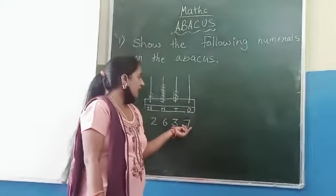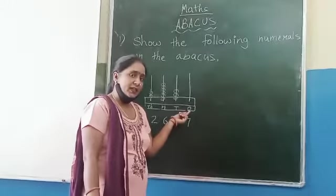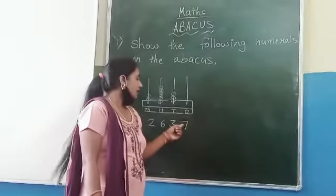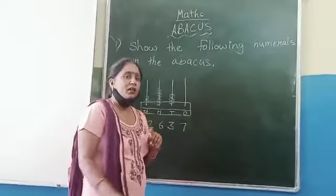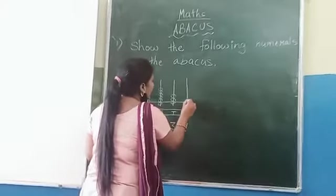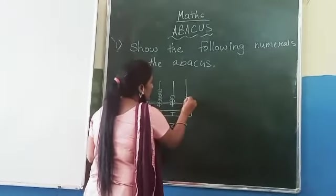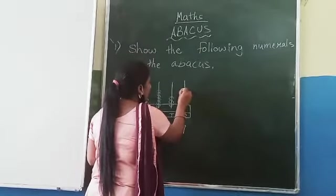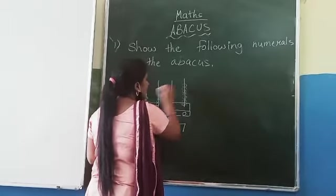Step 4: 7 is in the 1s place. Therefore there are 7 beads in the 1s place. 1, 2, 3, 4, 5, 6, 7.